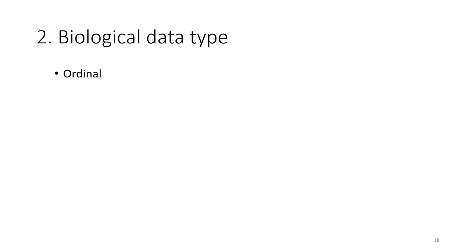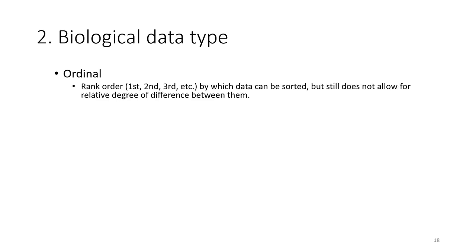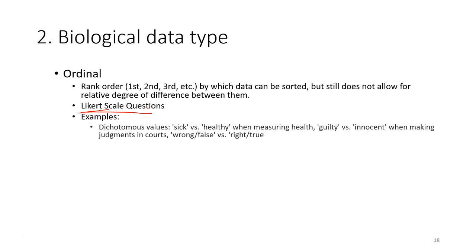The next type of data is ordinal data. Ordinal data is the data that can be sorted, but still does not allow the relative difference between them. Usually this is the data that we collect related to the questions that we use. We use the Likert scale questions, for example.